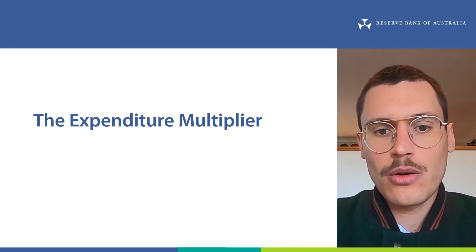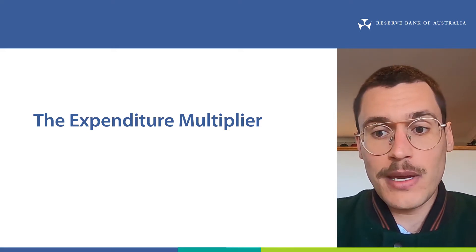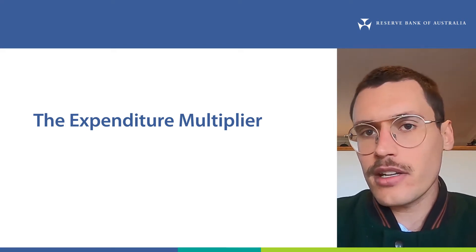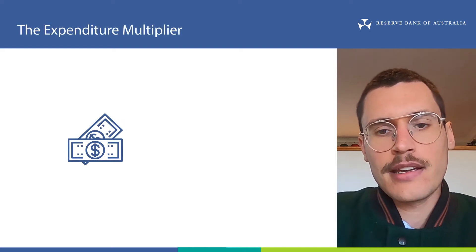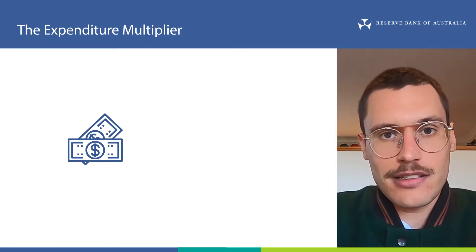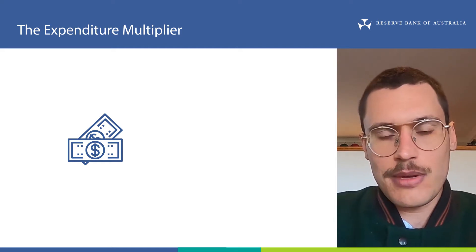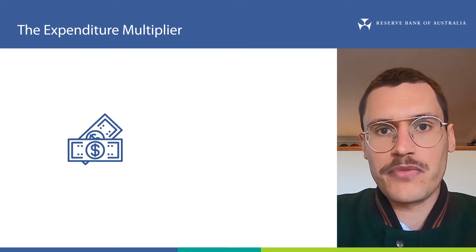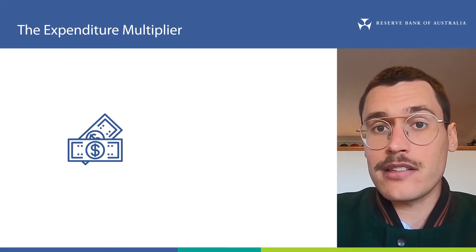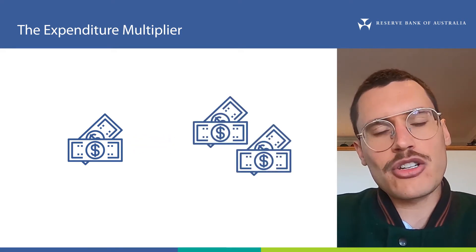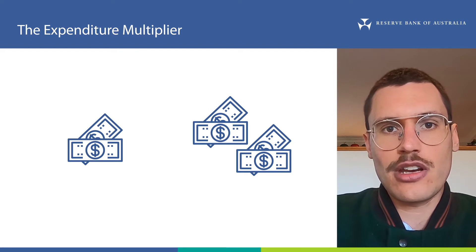For example, when you decide to change how much you spend, how does this flow through to total GDP? To do this, we're going to discuss a concept called the expenditure multiplier. The expenditure multiplier is an important idea for analysing how money that is spent flows through the economy and ultimately impacts GDP and therefore economic growth. The expenditure multiplier means that one extra dollar spent in the economy can often translate to much more than a one dollar increase in GDP.